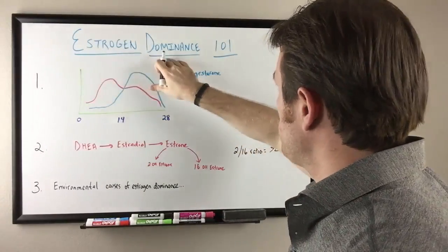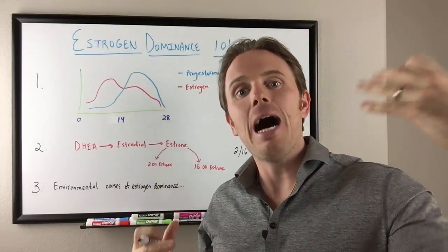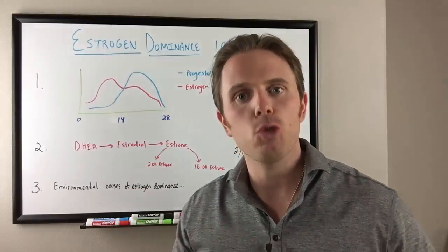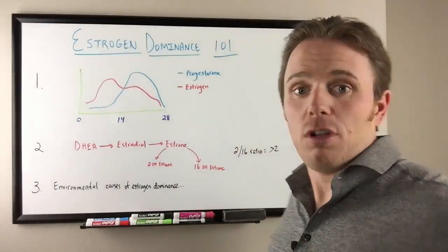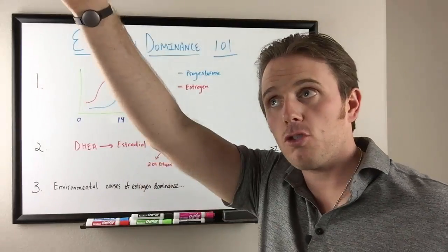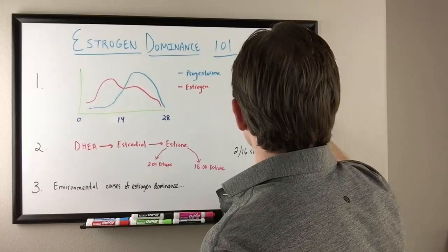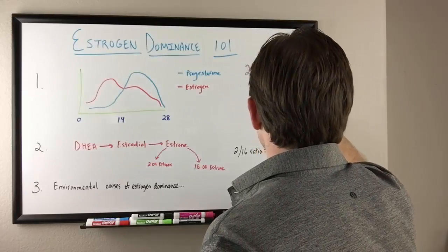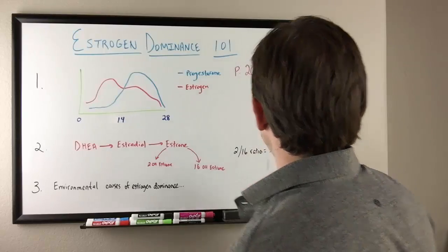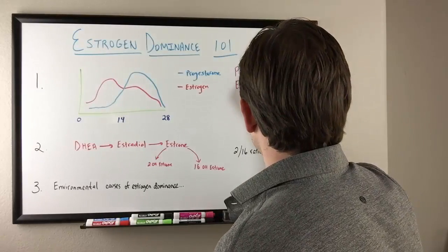First off, estrogen dominance is what it is. We have this ratio of estrogen that's a little bit higher in relation to what the normal ratio of progesterone should be. So let's establish what those norms are. Dr. John Lee talks about the fact that progesterone to estrogen ratio can be anywhere between 200 to 300 times. So progesterone can be 200 to 300 times more than one molecule of estrogen.